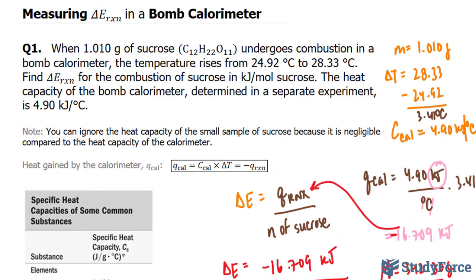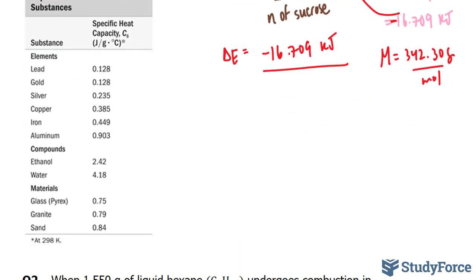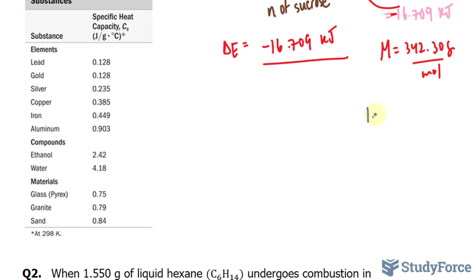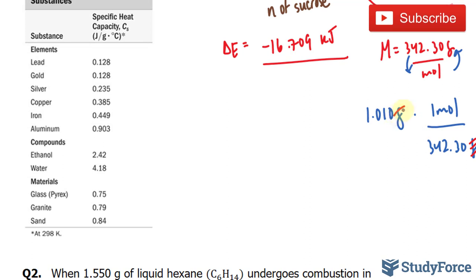So if I take my mass, which is 1.010, I'll write that down over here, 1.010 grams, and multiply this by our molar mass, where the moles are at the top and mass is at the bottom. I'll write down 1 mole at the top and 342.30 grams at the bottom. This gram unit and this gram unit will go away, leaving us only with moles.